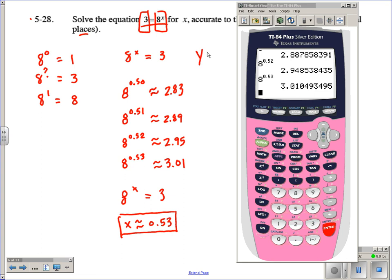We're going to set one side as its own function, and the other side as its own function, and then we're going to find the intersection. So, we could say y equals 8 to the power of x, and then we'll say y equals 3, and then we'll look at the solution to this system on the calculator.